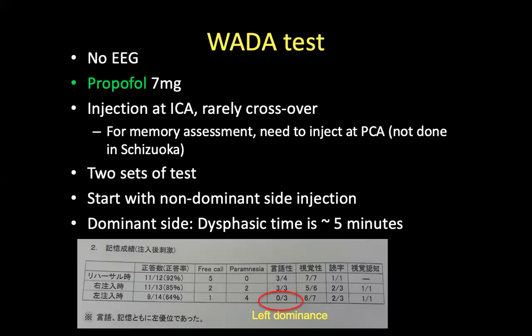The WADA test used in Shizuoka uses Propofol at 7 mg. We tried this for one patient in Malaysia. However, performing a WADA test in Malaysia requires booking an angio room and a radiologist, and costs about 3,500 to 4,000 ringgit (approximately 1,000 US dollars). Because of the cost, we no longer do WADA tests.